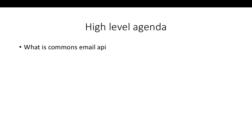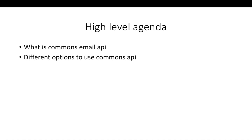We'll talk about one new API called Commons Email API. We'll also talk about different options which we can use in Commons Email API. This API has options like you can send simple email, multimedia email, and so many other options — I will show you in a few minutes.